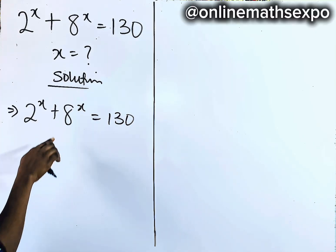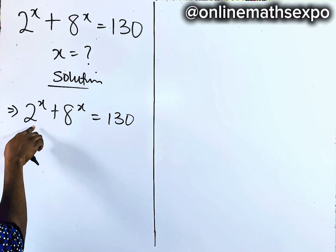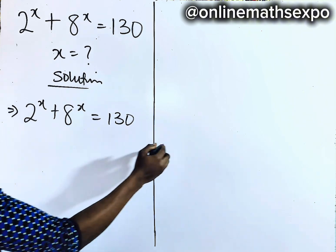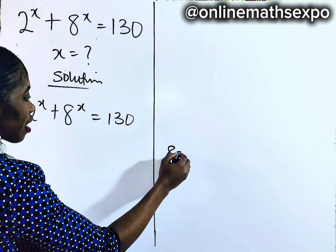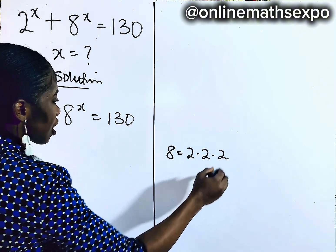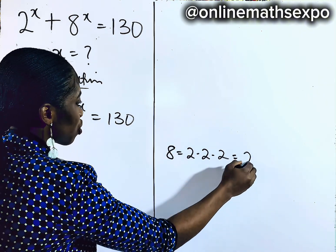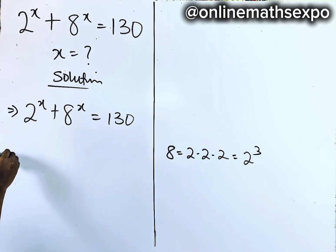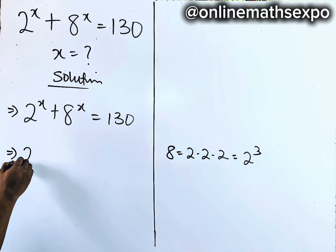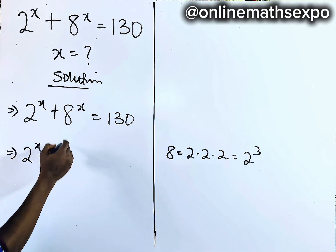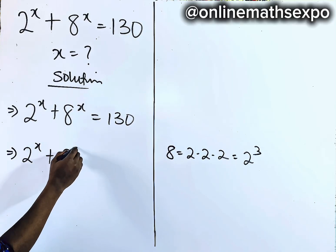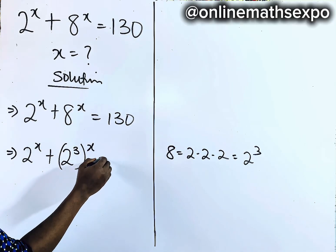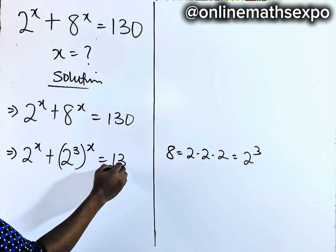We can make this share a common base. We know that 8 is the same as 2 multiplied 3 times, which is 2 to the power of 3. So rewriting what we have: 2 to the power of x plus 2 to the power of 3, raised to the power of x, is equal to 130.